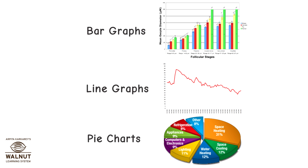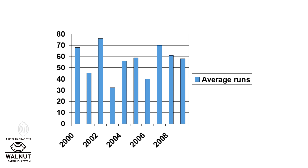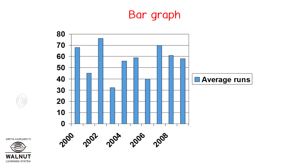What are the different things you can record in a graph? Graphs are used to convey information such as cricket scores, votes obtained in elections, weather forecast, rainfall, literacy, population, and many more such things.